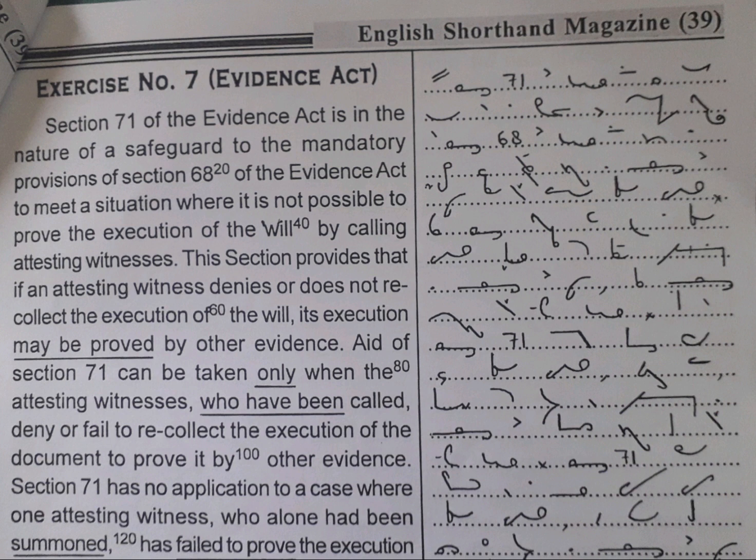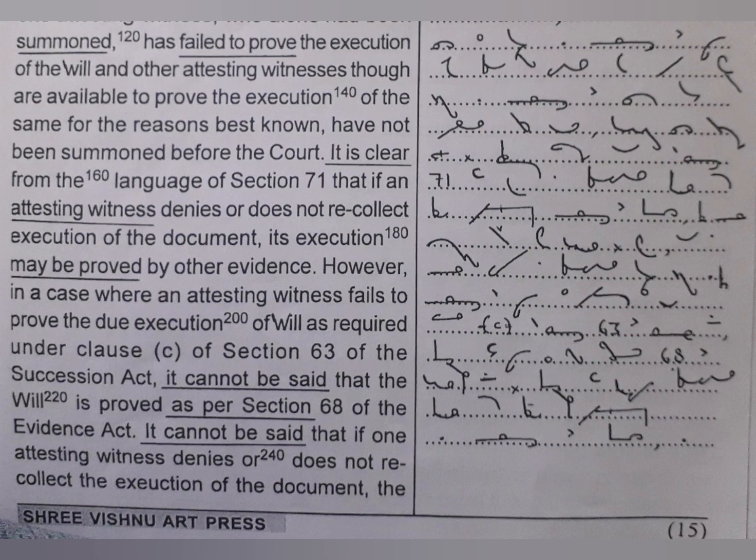Aid of Section 71 can be taken only when the attesting witnesses who have been called deny or fail to recollect the execution of the document, to prove it by other evidence. Section 71 has no application to a case where one attesting witness who alone had been summoned has failed to prove the execution of the will, and other attesting witnesses, though available to prove the execution of the same, for the reasons best known, have not been summoned before the court.